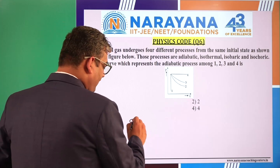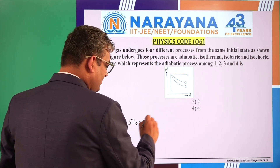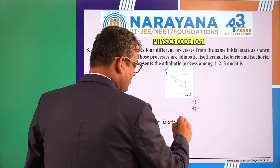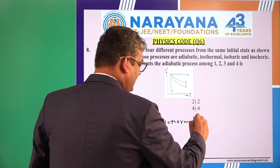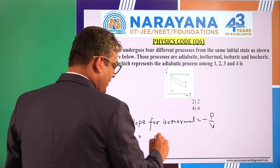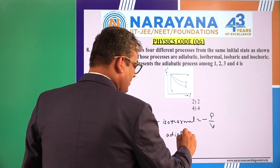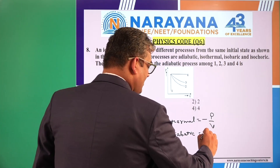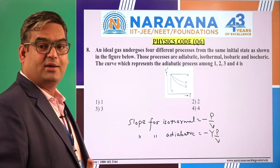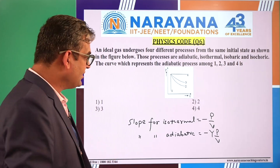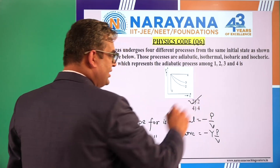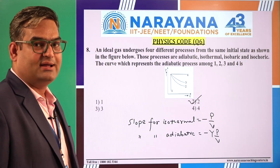The slope for the isothermal process is given by minus P over V, while for the adiabatic process it is minus gamma times P over V. That is why the slope of the adiabatic process is much steeper. Hence process 2 must represent the adiabatic process, so the second option is the correct answer.